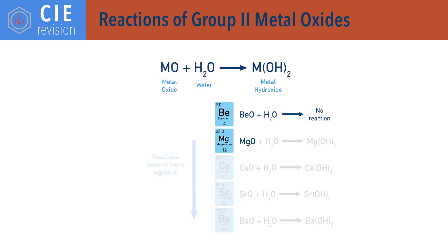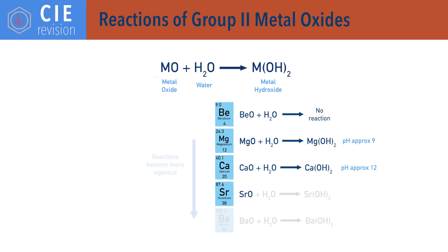Magnesium oxide (MgO) reacts with water to form a weakly alkaline solution with a pH of approximately 9. Calcium oxide (CaO) reacts quickly with water in an exothermic reaction, producing a solution with a pH of approximately 12. Strontium oxide (SrO) and barium oxide (BaO) react vigorously with water and produce highly alkaline solutions with very high pHs.